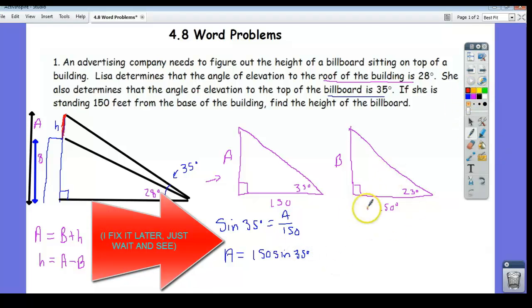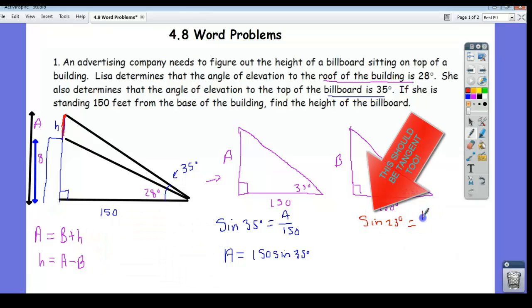sine of 23 degrees is equal to b over 150. Actually,